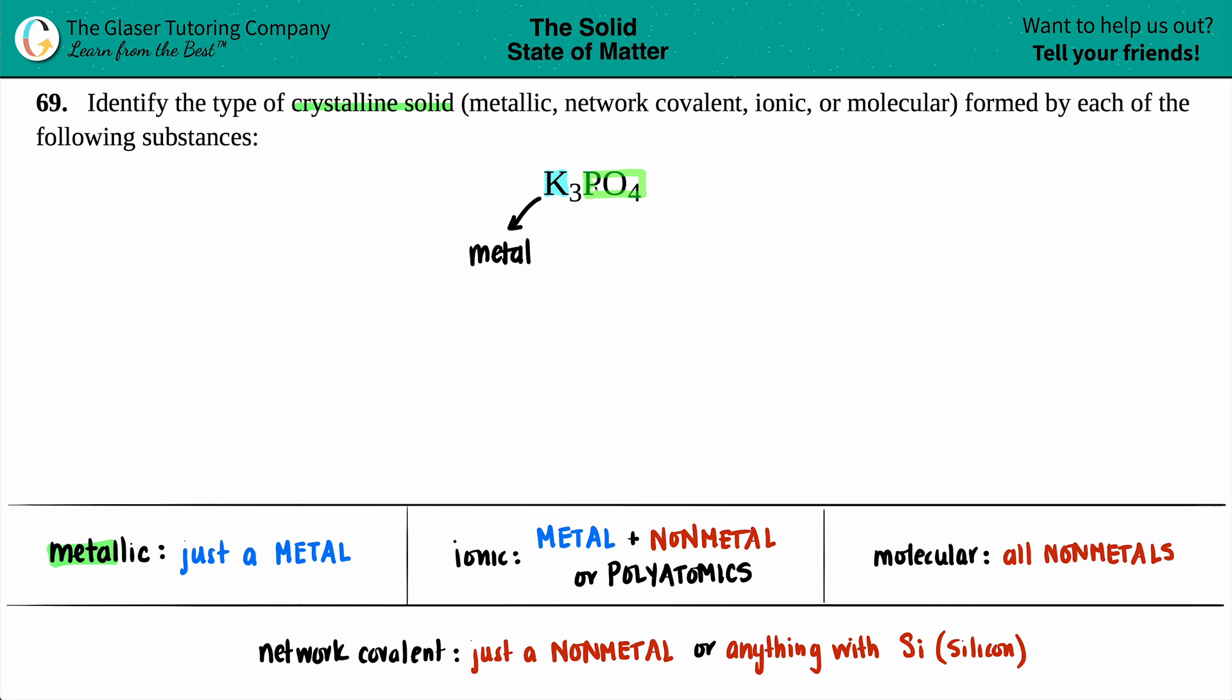But also know that doesn't PO4 look familiar? We've seen this kind of ion over and over again. PO4 three minus is phosphate, and phosphate is a polyatomic ion.